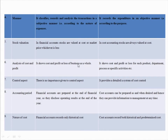Sixth difference is scope. In financial accounting, the financial statements show the results of the business as a whole. But in cost accounting, we can show cost, profit, or loss for each product, department, or process, or specific activities.